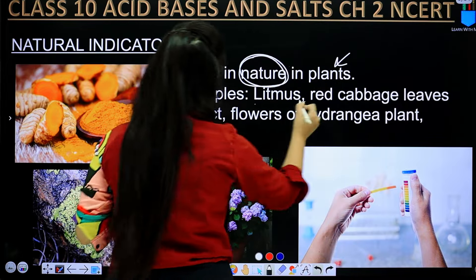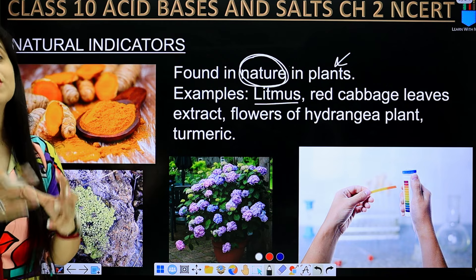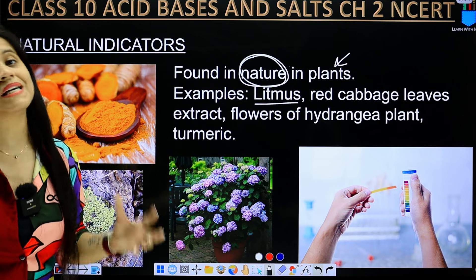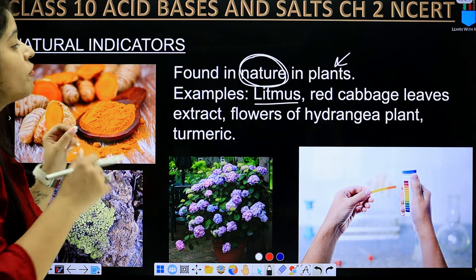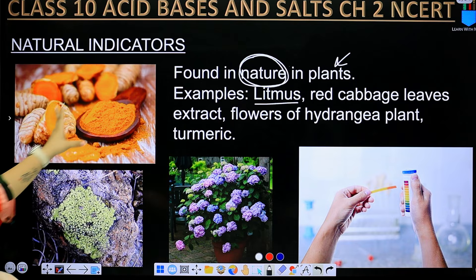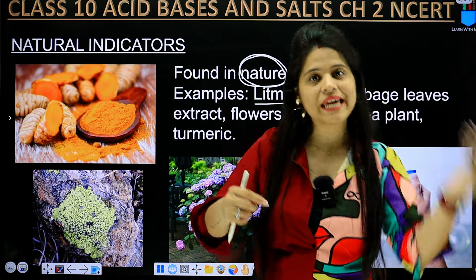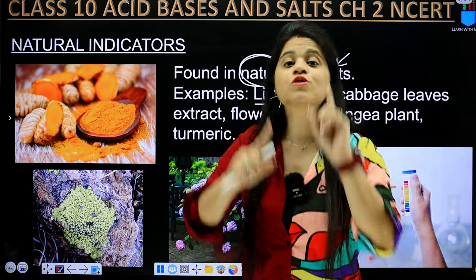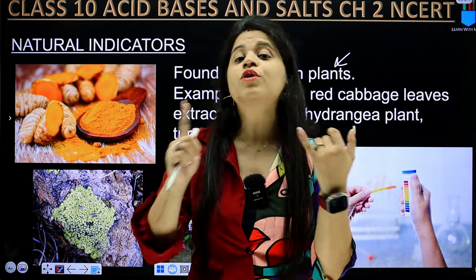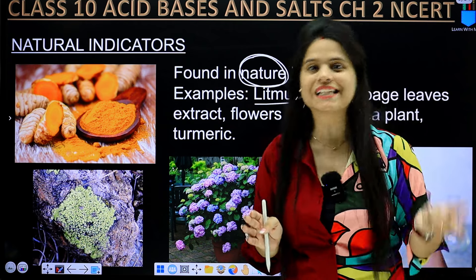Examples of natural indicators include litmus, red cabbage leaf extract — which also helps us identify a solution as acid or base — and flowers of the hydrangea plant, which can also act as an indicator. Then we have turmeric, which we use in our food, and it is also an indicator that helps us see what changes occur in acid and base. We are also going to do experiments; in Chapter 2 you will find a separate playlist with all the experiments, so you can see those experiments to get more clarity.